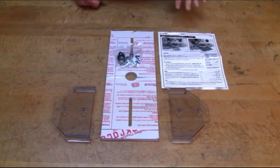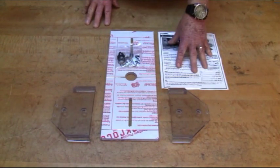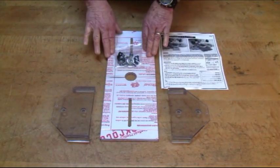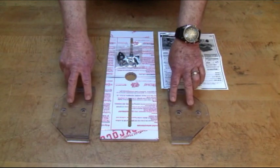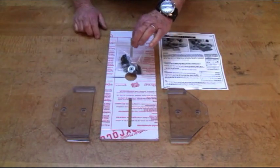What you'll end up getting is the instruction sheet, the base plate, two guide wings and a bag of hardware.